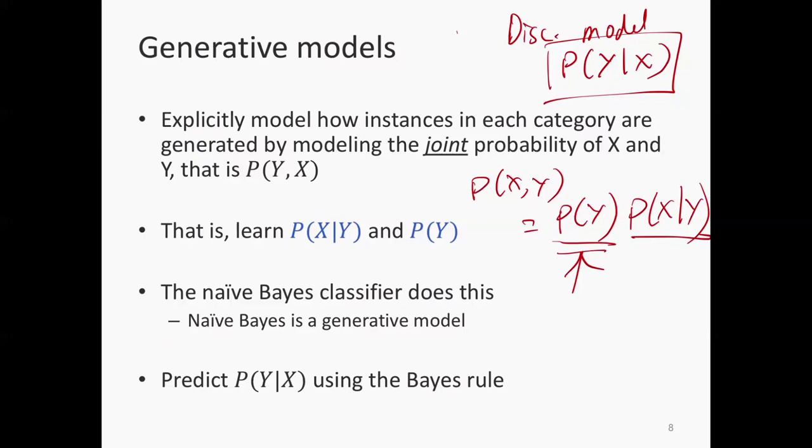P(X|Y) is asking: if I tell you that this image has a cat, can you construct that image for me? Can you construct an image P(X) given the label that this has a cat? So given these two distributions, you can combine them together and you can get P(X,Y).